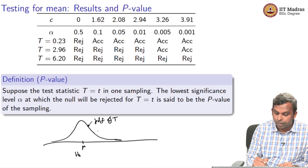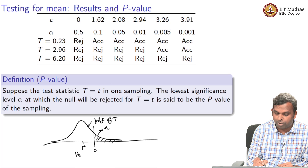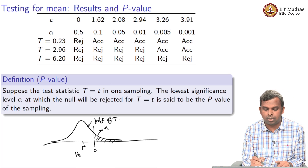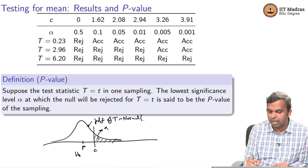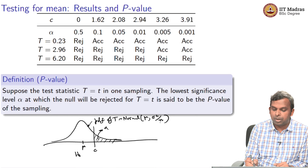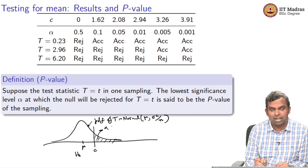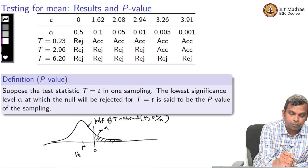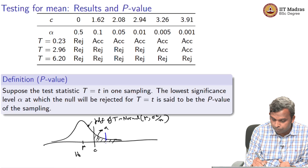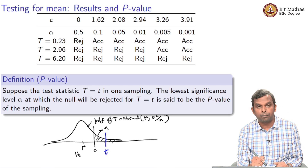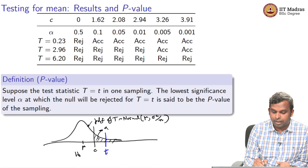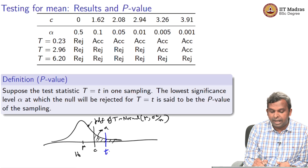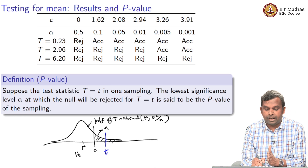You fixed an alpha and obtained a critical value C, so this area is alpha. The distribution of T is normal with mean mu and variance sigma squared by n — you know sigma squared, n, and mu, so you can find C. Now suppose you actually observe a value T. Since T is greater than C, you end up rejecting the null hypothesis for this particular value of alpha.